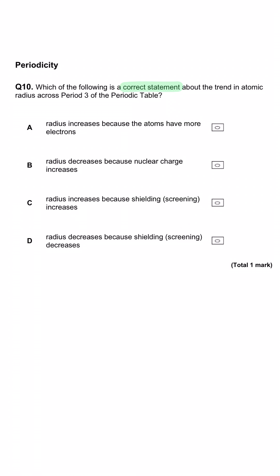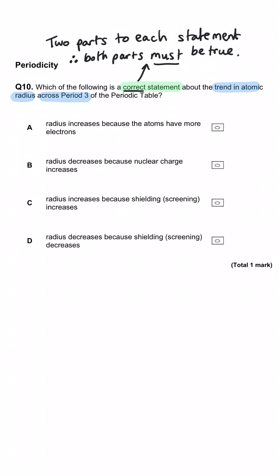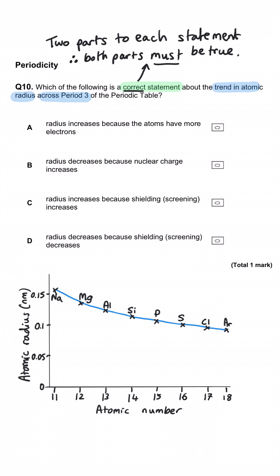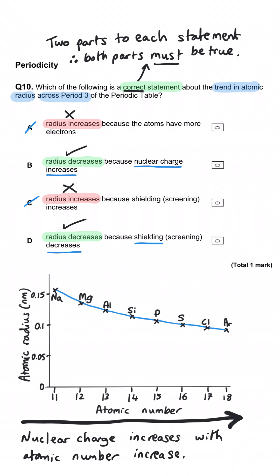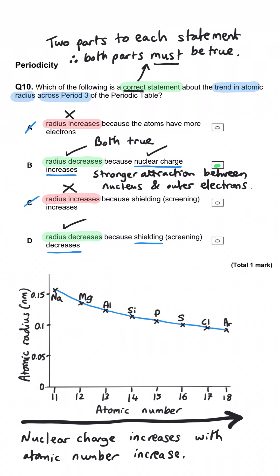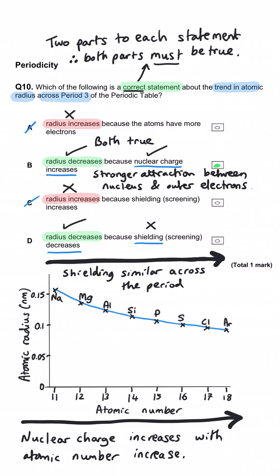Which of the following is a correct statement about the trend in atomic radius across period 3? Two options say the radius increases and two say it decreases. The radius decreases across the period, so we can rule out A and C immediately. Looking at B and D for correct justification: B states the nuclear charge increases, which is true and explains why electrons sit closer to the nucleus with greater electrostatic attraction. D is false because shielding does not decrease — it remains pretty much constant across the period. So B is correct.